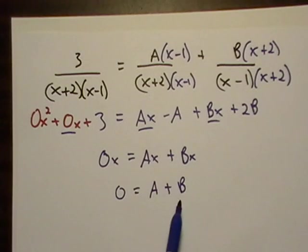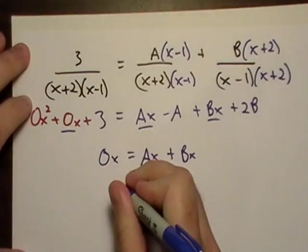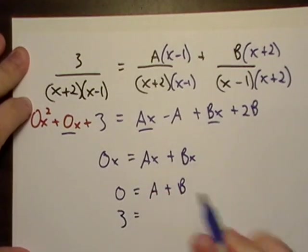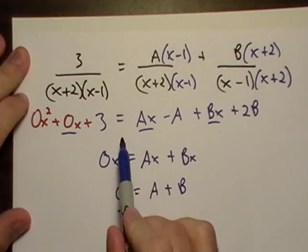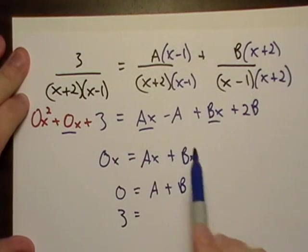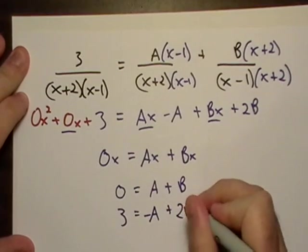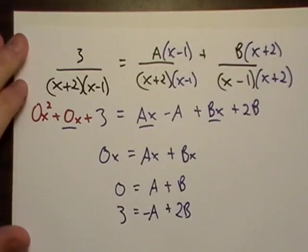So whatever A is, B has to be the negative. Just for observational purposes. And then my x to the zero term is just alone 3. And then here's all my x to the zero terms over here. I got a negative A plus 2B.